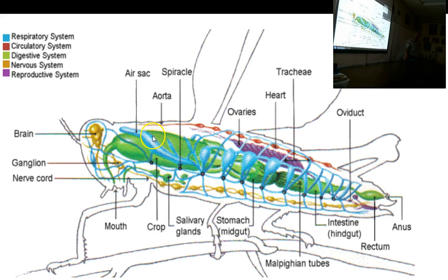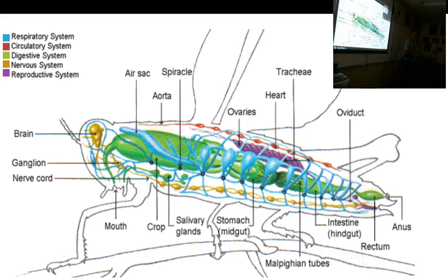Bug anatomy — this is a grasshopper you will see on Wednesday. It has a dorsal circulatory system and a ventral nervous system, and the gut goes through the middle: the foregut, the midgut, the hindgut. The respiratory system is just a branching set of tubes that go all through the body, opening to the air at several points called spiracles. The air circulates by diffusion — the body doesn't do anything to move the air forcefully. That's why when you spray a bug with bug spray, it gets into the respiratory system, moves through all the trachea, and reaches all the cells at about the same time.